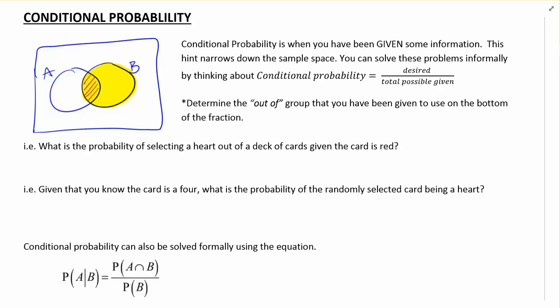A conditional probability is a situation where you've been given a hint of some sort. You've been given some information, and what we do is we narrow down the sample space.